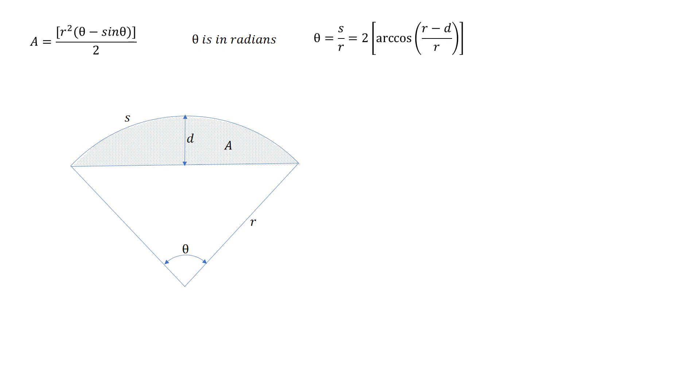You can also flip this equation and solve for theta. So if you're asked for theta or need to solve it this way, it's equal to S over R, which is also equal to 2 times the arc cosine of R minus D, divided by R.